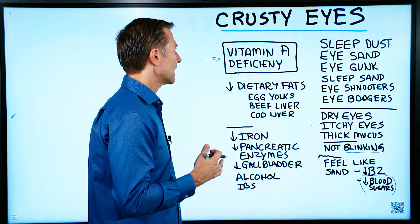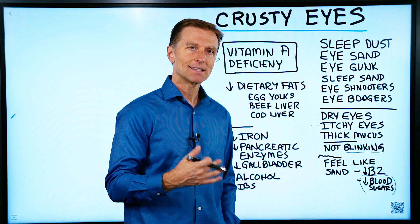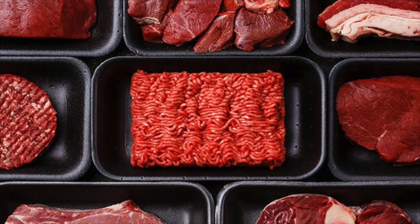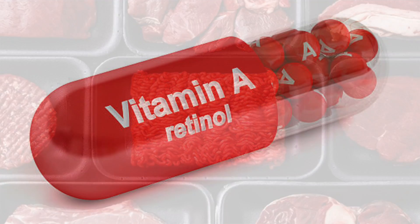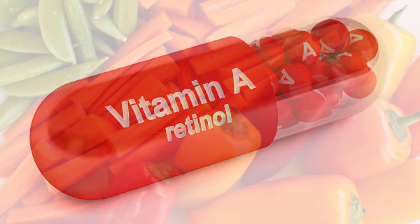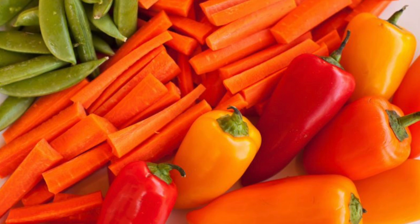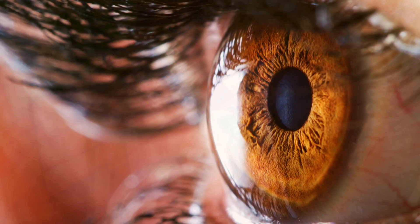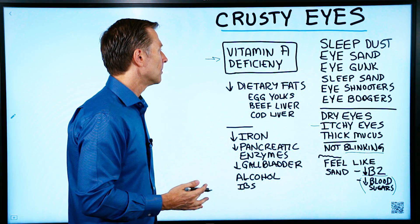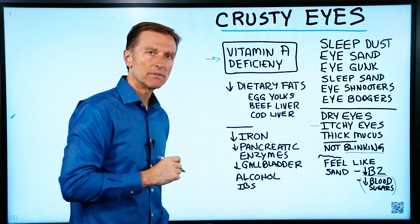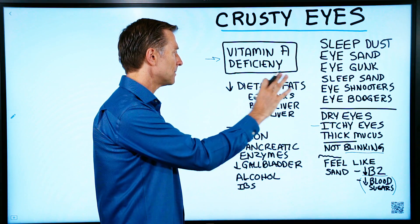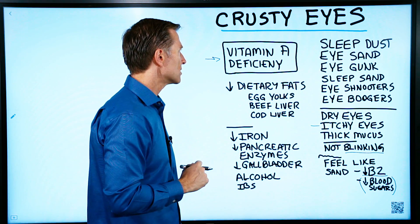Vitamin A is a fat-soluble vitamin. It comes mostly from animal products if we're talking about retinol, which is the active form of vitamin A. The pre-vitamin A — beta-carotene and carotenoids — which have the ability to turn into retinol, come from plants, but the conversion is very, very low. I do suggest consuming both animal and plant versions of vitamin A.